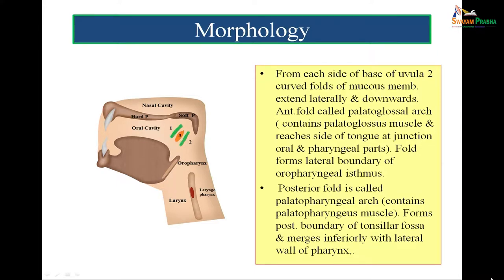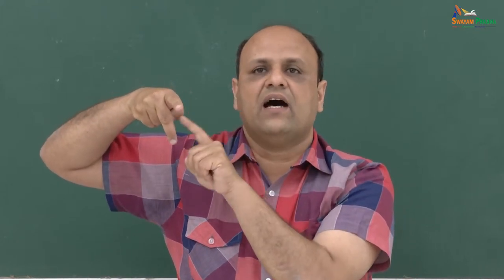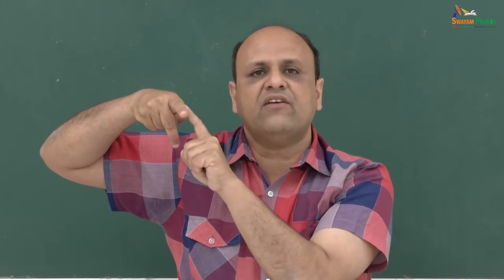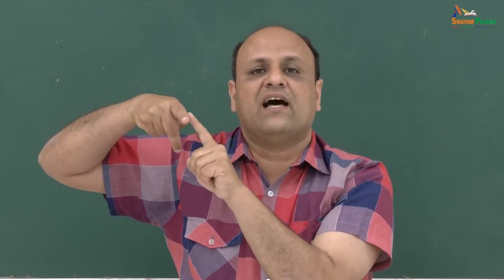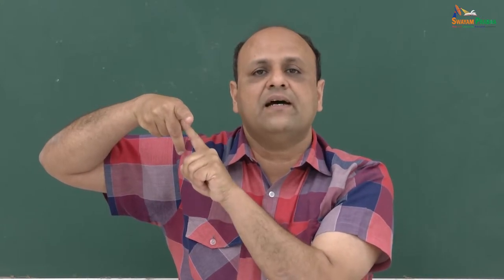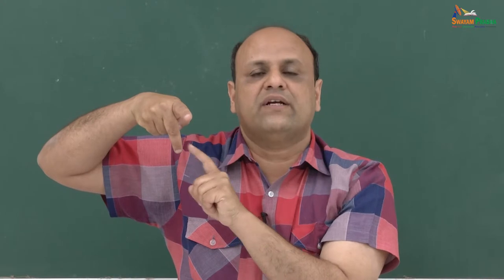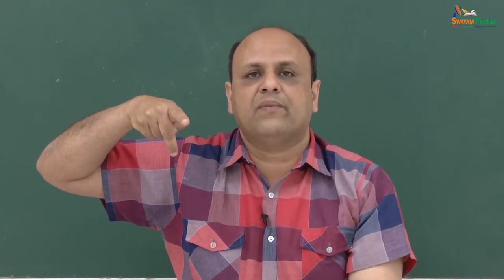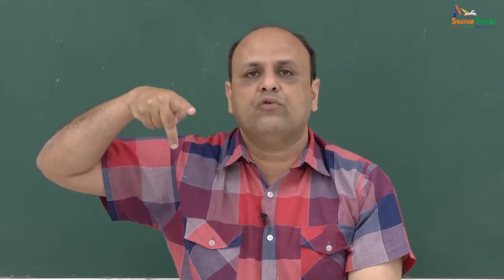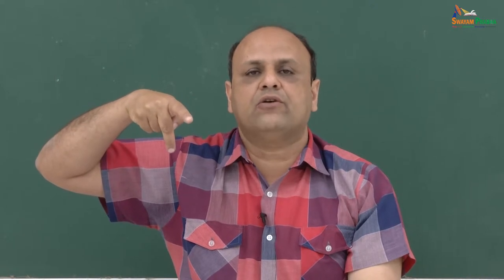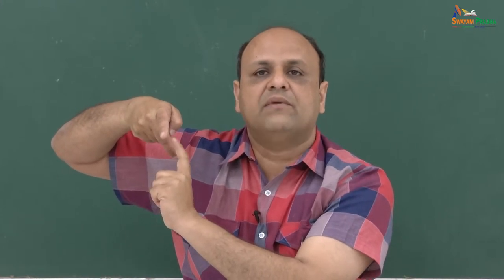From each side of the base of the uvula, two curved folds of mucous membrane extend laterally and downwards. One fold goes anteriorly and the other posteriorly. This anterior fold represents the palatoglossal arch, while the posterior fold represents the palatopharyngeal arch. You can make out the palatoglossal arch and the palatopharyngeal arch, and in between the two arches lies the tonsillar fossa, which contains the almond-shaped tonsil.